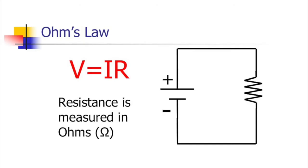Ohm's law is the equation V equals I times R. V is voltage in volts, I is current in amps, and R is resistance with units of ohms — which you can write as 'ohm' or use the Greek capital omega symbol. Either one works for units.